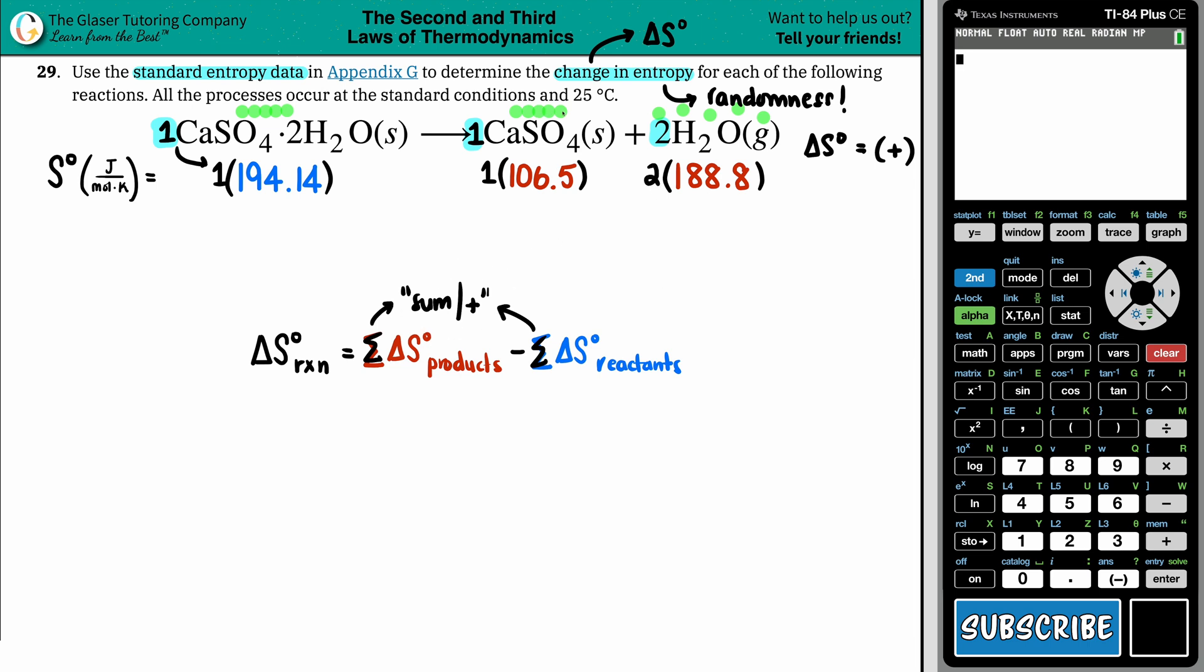Now we have to sum them up, sum up all the reds, sum up all the blues, but one times 194.14 is 194.14. But now I'm going to go to the calculator and I have to figure out what the sum is here. It's CaSO4 literally plus H2O. So it'd be this value plus this value. So let's see, I'm going to say two times 188.8, and then I'm going to add that to the 106.5. And I get 484.1. Okay. So use those values. Delta S for the whole entire reaction equals 484.1 minus the reactant, which was 194.14.